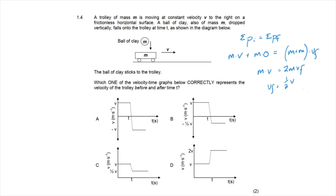The velocity halves because the mass of the trolley effectively doubled; to conserve momentum, velocity must halve. The correct answer is option C, which shows velocity dropping from v to ½v at time t.